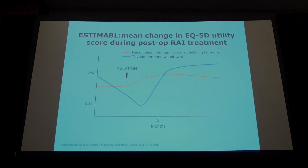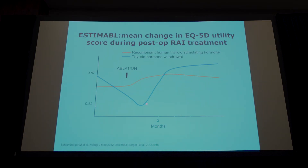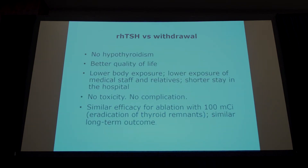This means that 30 mCi with recombinant human TSH can be used whenever it is indicated. One major advantage is that quality of life is maintained — quality of life decreases during thyroid hormone withdrawal for at least two months, but with recombinant human TSH it is maintained. Additional advantages include no hypothyroidism, lower whole-body radiation exposure because retention is much lower after recombinant human TSH than after withdrawal, no toxicity or complications, and similar efficacy in terms of ablation rate on a long-term basis.